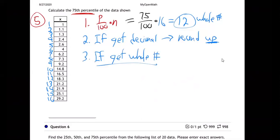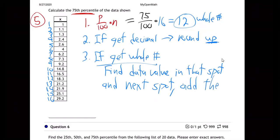then you find the data value in that spot and the next spot, add them and divide by two. Notice you're going to average them. So basically if you get a whole number, you're going to average two data values is what you're going to do. So that's what we got.